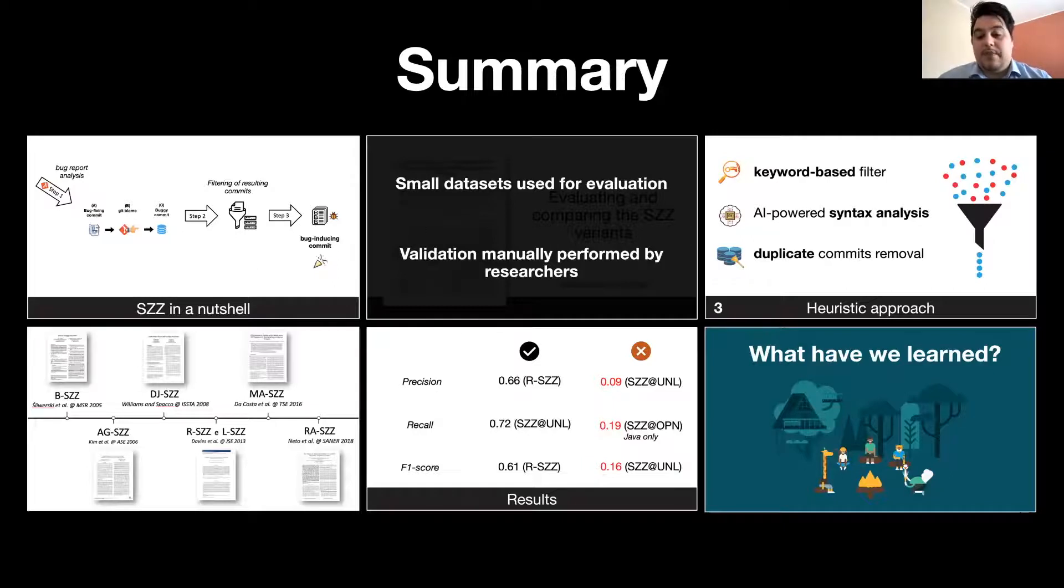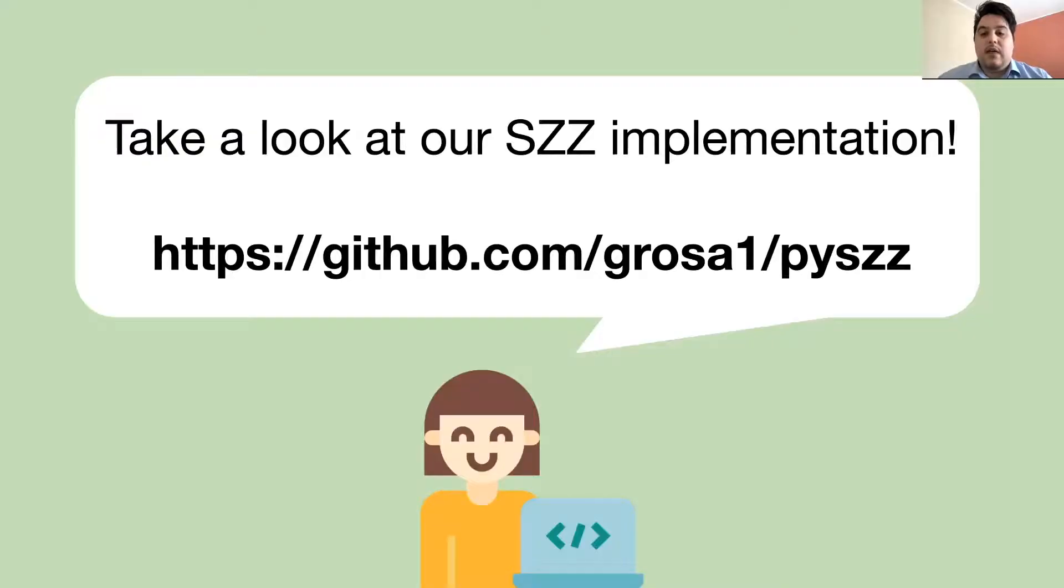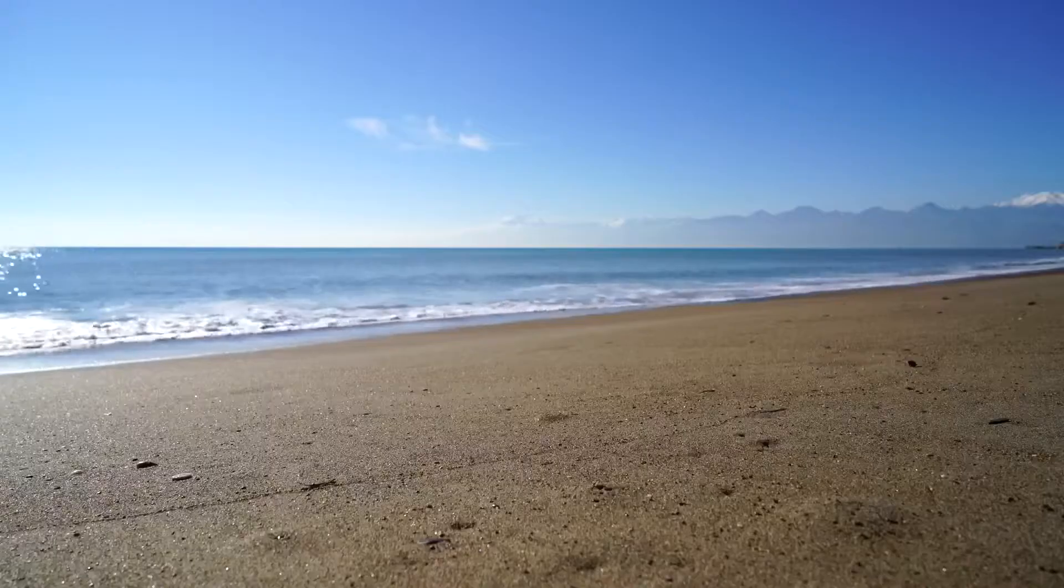And to help this, we also reported some lessons that we learned analyzing the commits where the SZZ variants fail. Our implementations of SZZ are publicly available on GitHub. So, take a look at our repository. Thank you.